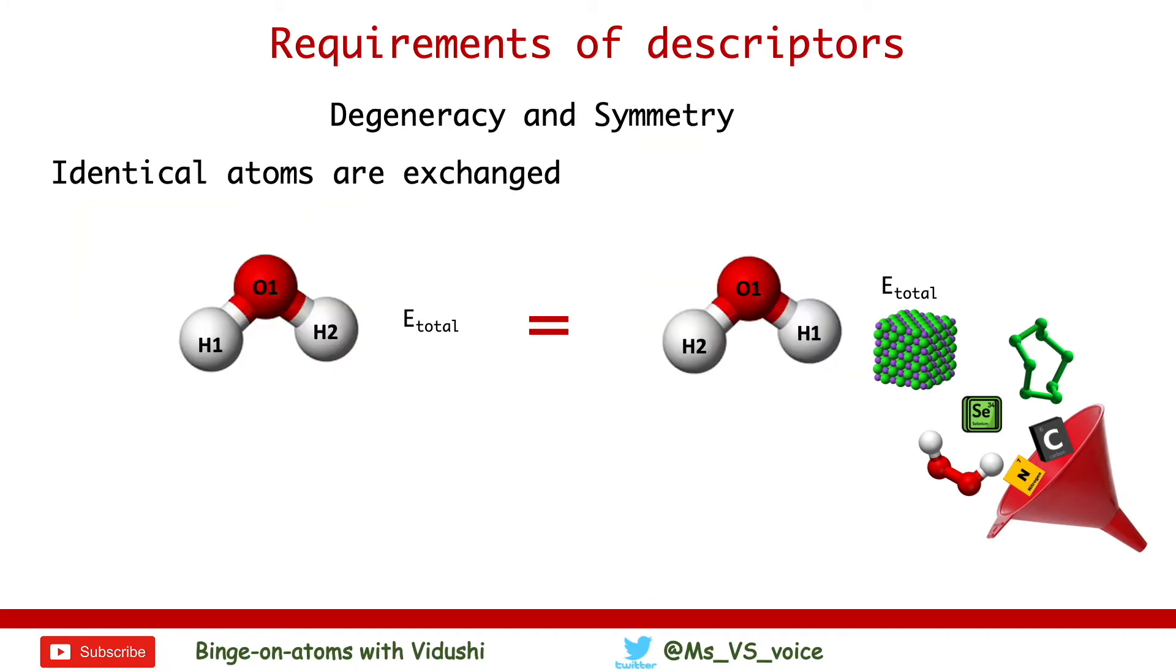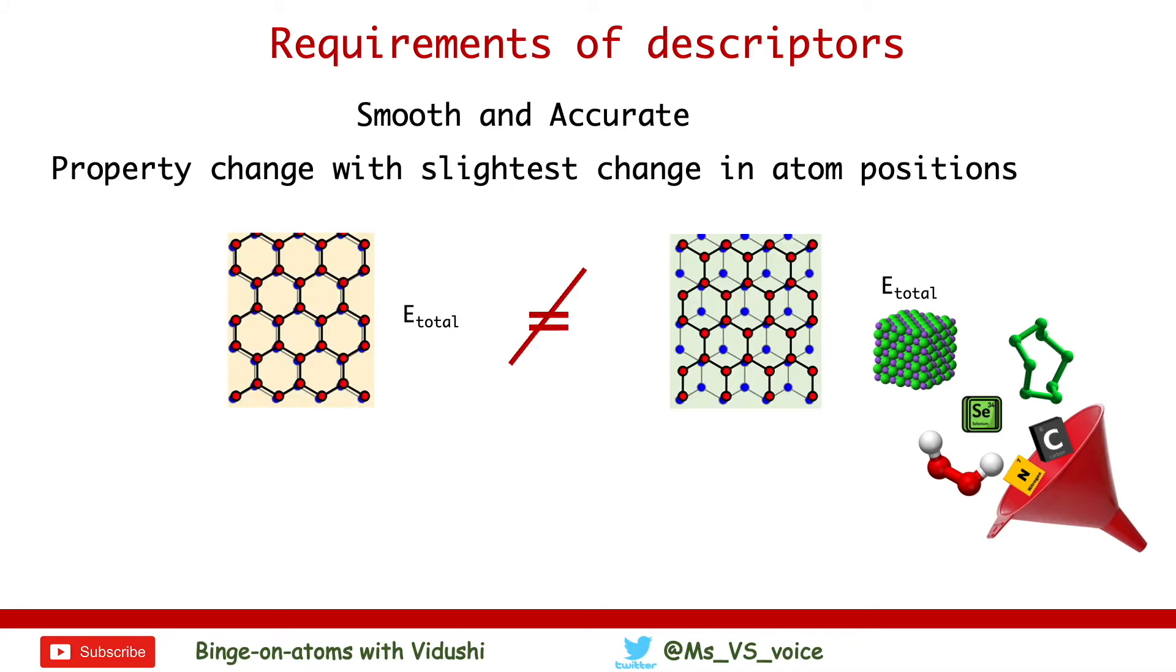Next, the predicted property of the material should not change if identical atoms are exchanged, and descriptors should be able to accurately differentiate two materials even when the atomic positions are slightly different.